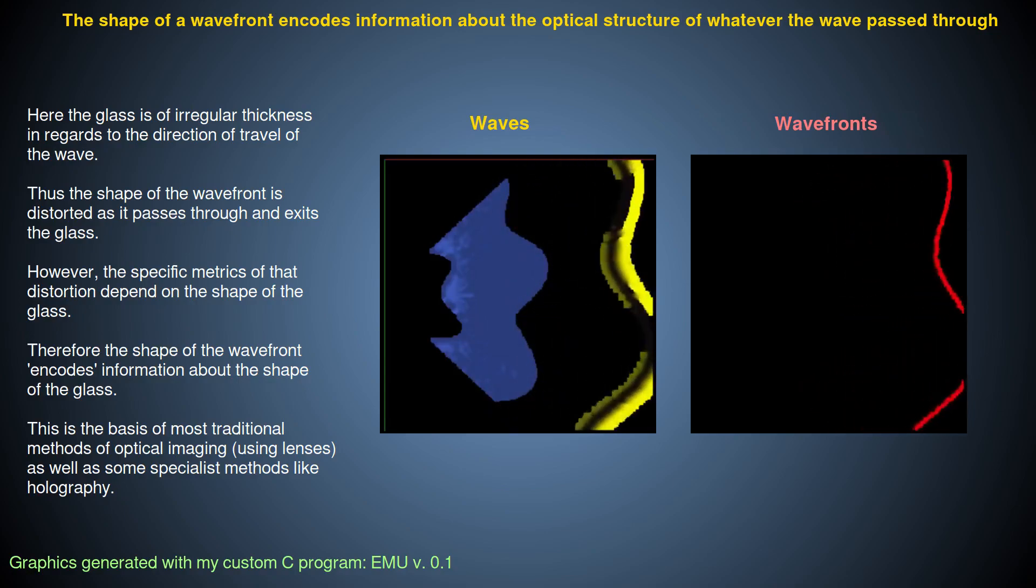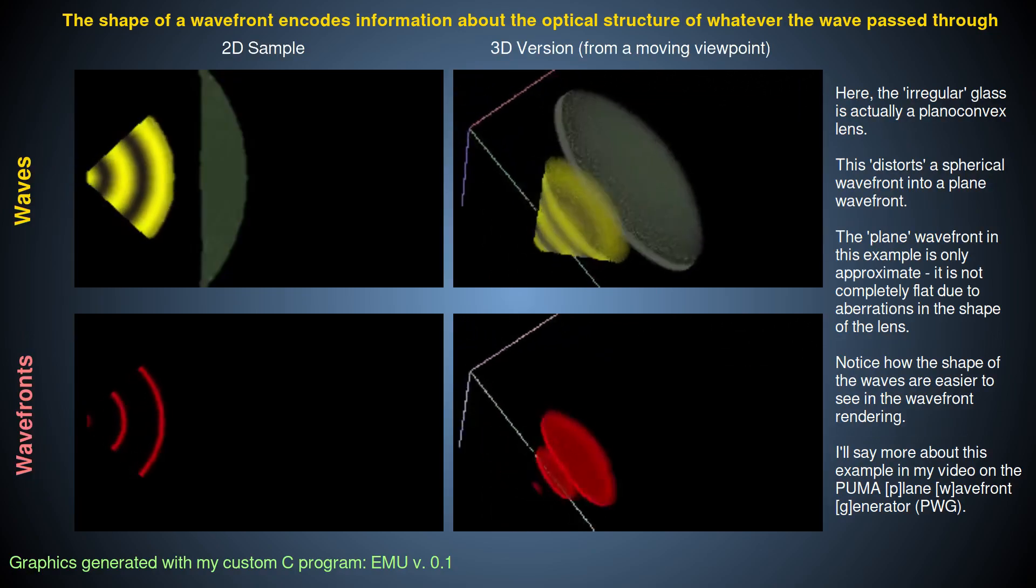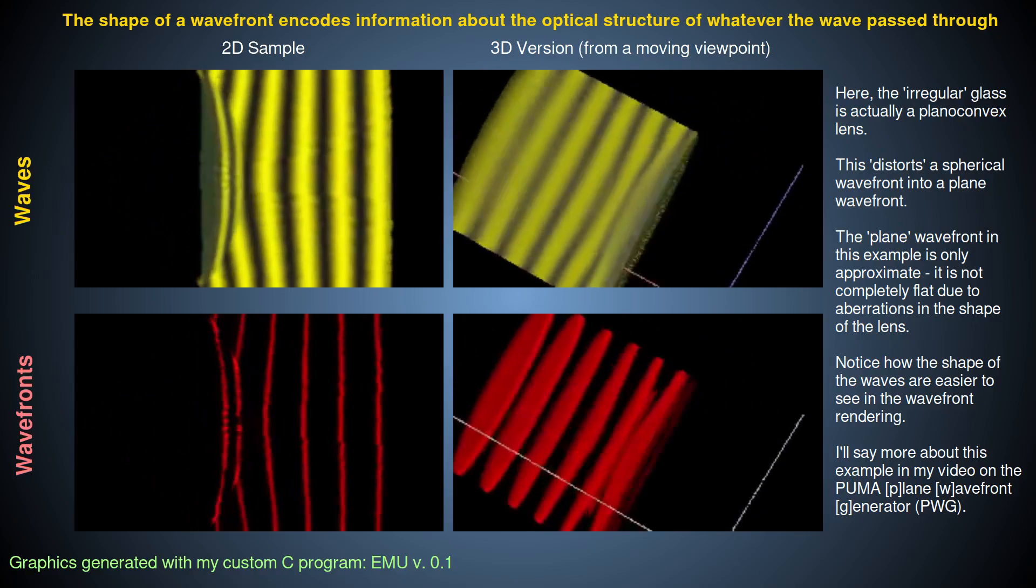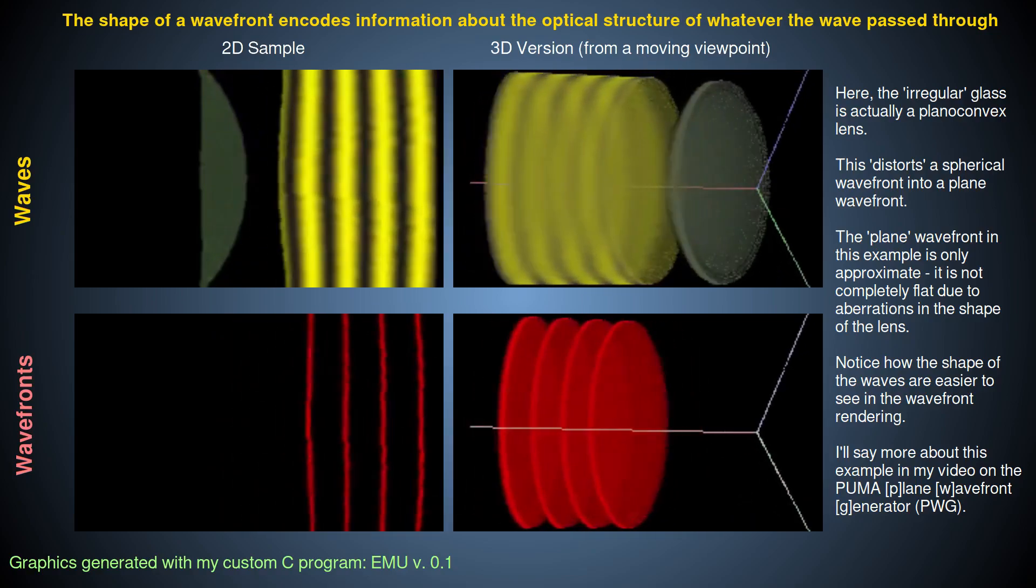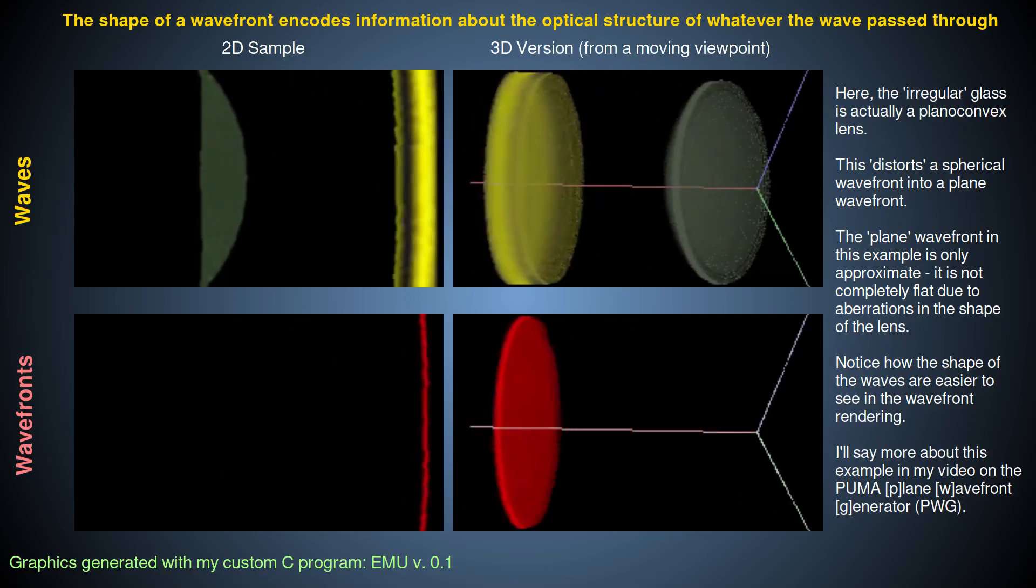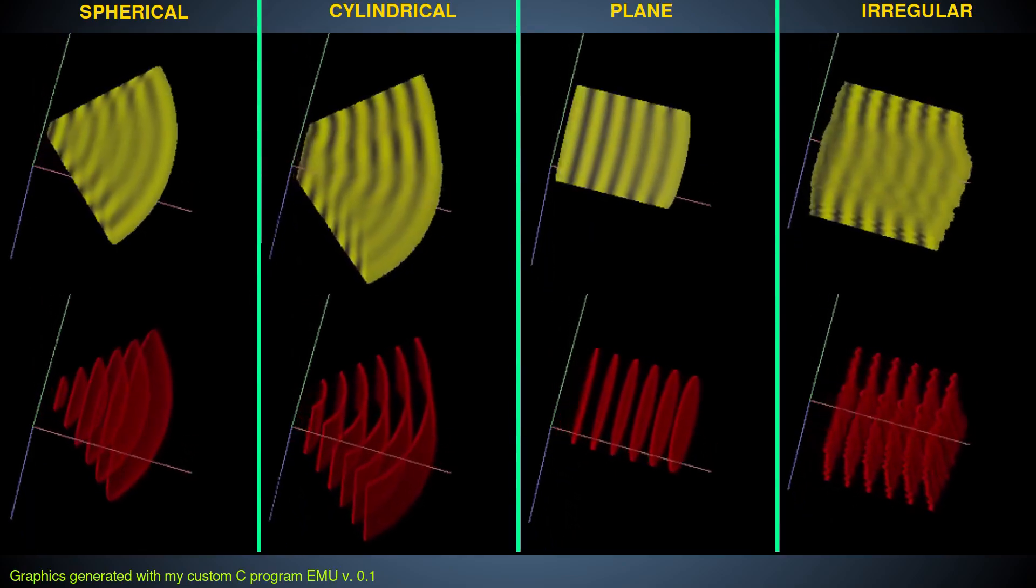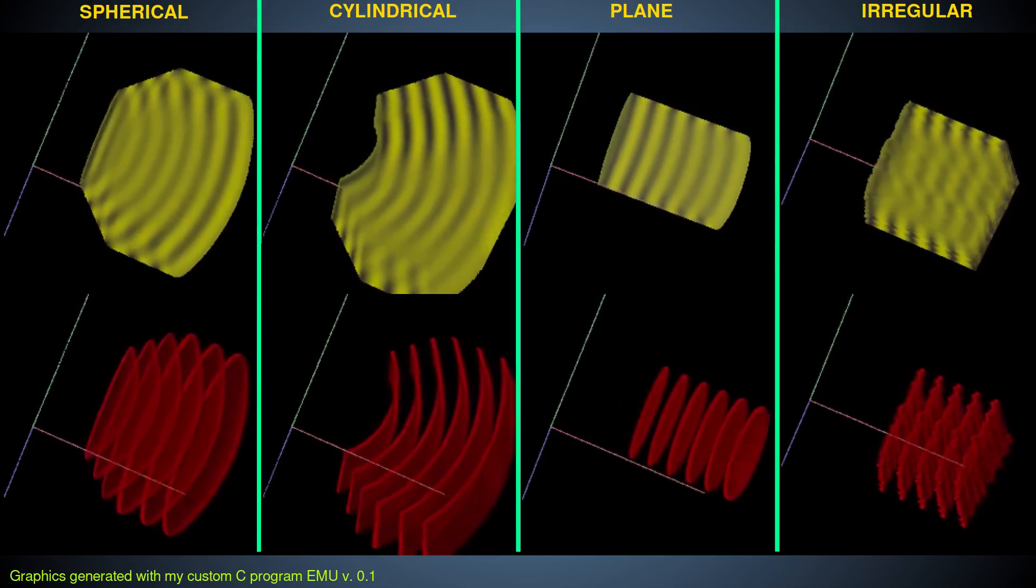This gives us information about the shape of the optical density variations of the object the radiation has passed through. In other words, the shape of the wave front encodes information about the shape of any object the wave front has passed through. This is in fact the basis of optical imaging in general, phase contrast imaging in general, and Gaborian holographic imaging as a special case. Thus.